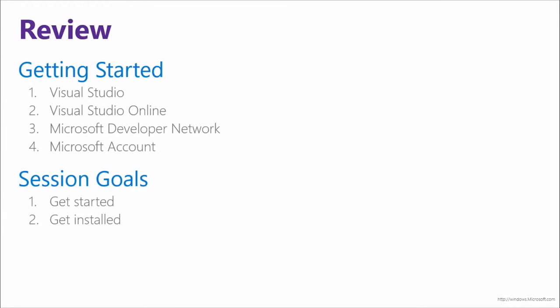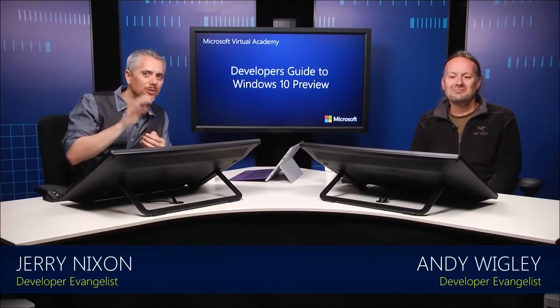So let's review. We spoke about all the things developers need to have. We talked about Visual Studio — basically the one thing you need other than Windows — and Visual Studio Online as the online supplement with services that help developers' lives get better. Then we talked about MSDN, where you can download all our software. And the Microsoft account — that one unified account across everything. Now go install Visual Studio 2015 Preview and watch more modules.